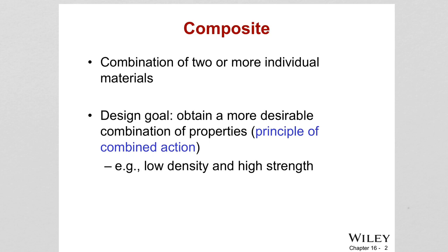The idea is to engineer materials to maximize the properties of both materials. Examples of applications include aerospace structural components, automotive parts, sinks, countertops, swimming pools, buildings, bridges, snowboards, golf clubs, and fishing poles. Most of the transportation, aerospace, and sports goods industries are now made of composite materials.